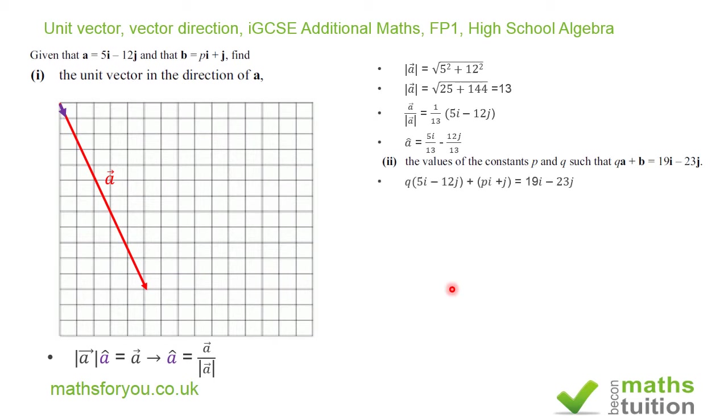So we then do q times a, where a is 5i minus 12j, plus b which is pi plus j, and that's equal to 19i minus 23j.